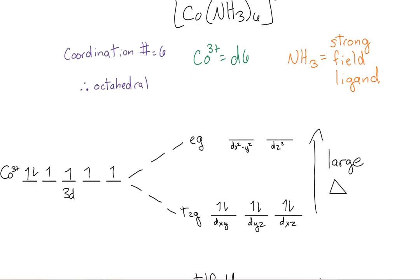EG will have the dx squared y squared orbital and the dz squared orbital. T2G will have the dxy orbital, the dyz orbital, and the dxz orbital. Now, we have strong field ligands, remember ammonia? This means we'll have a large crystal field splitting energy, shown on the right.